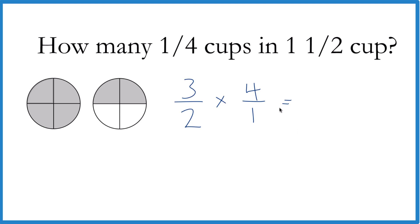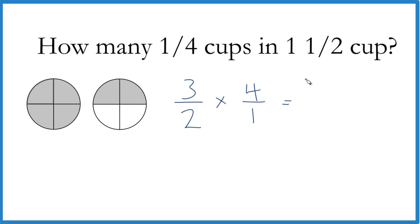So now we can do our multiplication. Three times four is twelve. Two times one is two. Twelve divided by two, that's six.